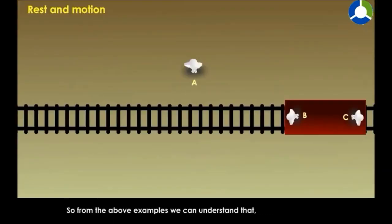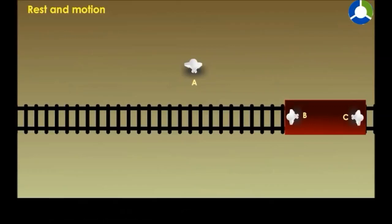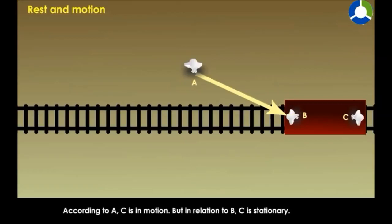So from the above examples, we can understand that an object may be in motion with respect to another object but may be stationary with respect to a third object. According to A, C is in motion, but in relation to B, C is stationary.